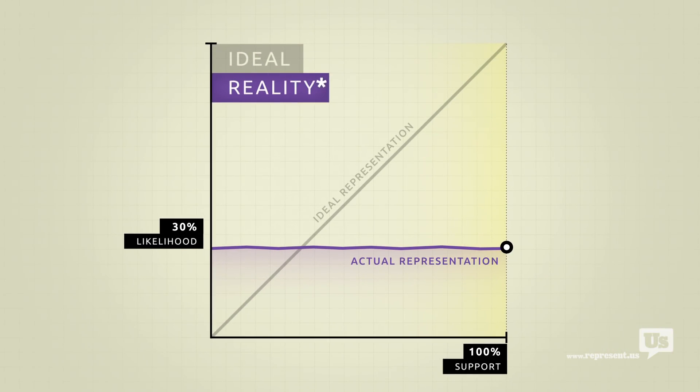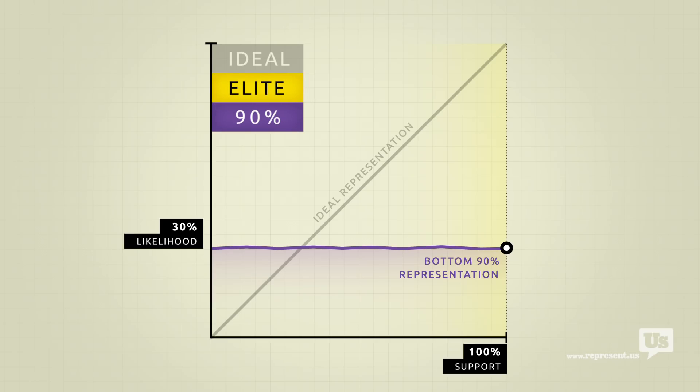But there's a catch. This flat line only accounts for the bottom 90% of income earners in America. Economic elites, business interests, people who can afford lobbyists, they get their own line.